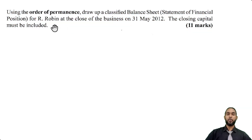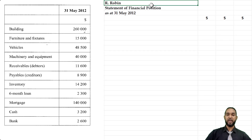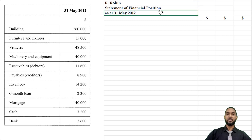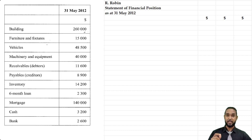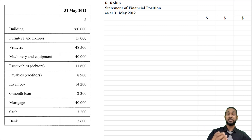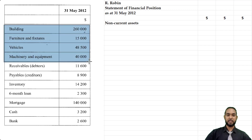So we want a balance sheet in order of permanence. Always remember to head up your statements unless they're already headed for you: name of the entity, name of the statement, and the period to which it applies. Order of permanence — permanent means long lasting. The order of permanence means you're starting with the longer lasting assets first. If you need more information on the different ways to present your balance sheet or statement of financial position, check out my balance sheet playlist. So again, permanence means long lasting, and we're going to start with the longest lasting assets first, which are your non-current assets.